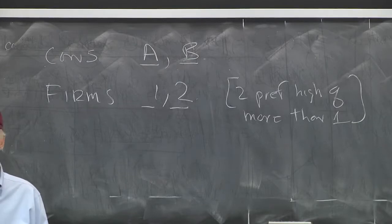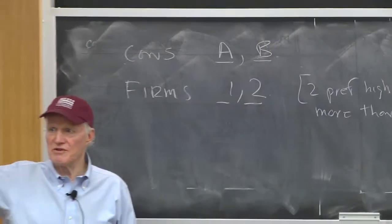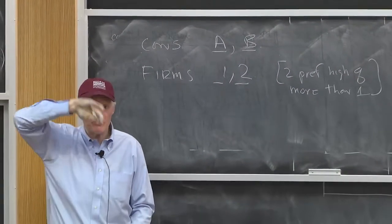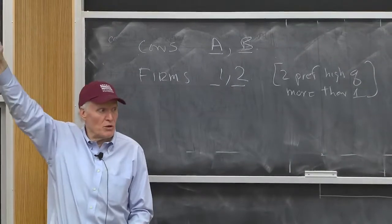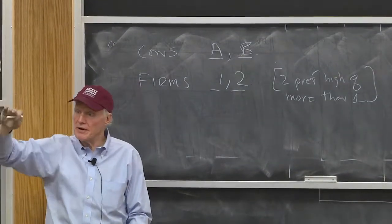They're not higher or lower. That doesn't make any sense. They're indifference curves. Just whenever they cross, 2s are going to cross from below. They're going to be steeper.